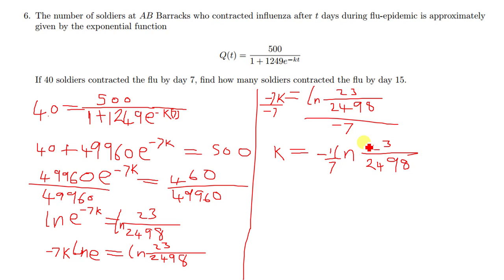Now the question goes further to say find how many soldiers contracted the flu by day 15. So by the 15th day, the number of soldiers that contracted the flu is just equivalent to Q when time is equal to 15. So meaning in that expression, where there's k we'll put that value, and where there's t we'll put 15.